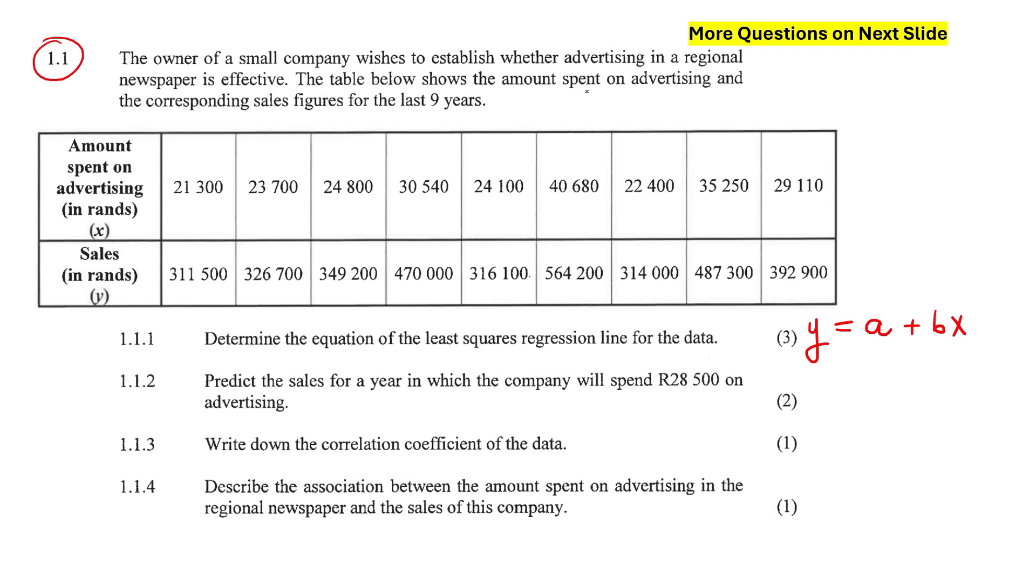So a, we got as 1730.22. B, we got as 13.96. And then r is 0.98. So if we write out the equation, then you're just going to say y equals 1730.22 plus 13.96x.